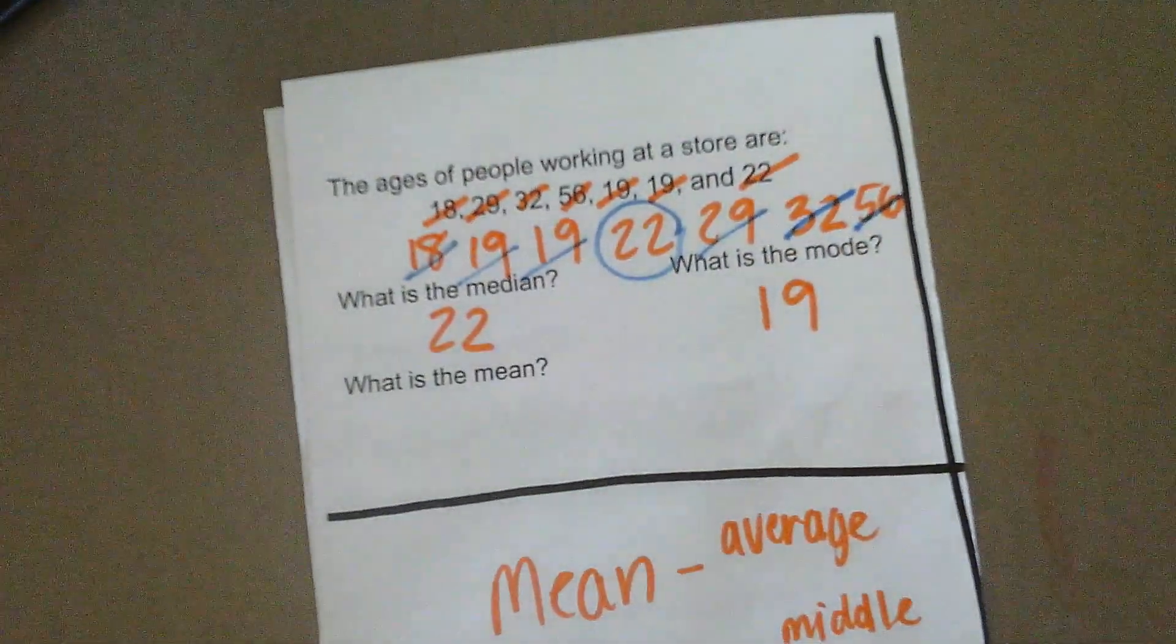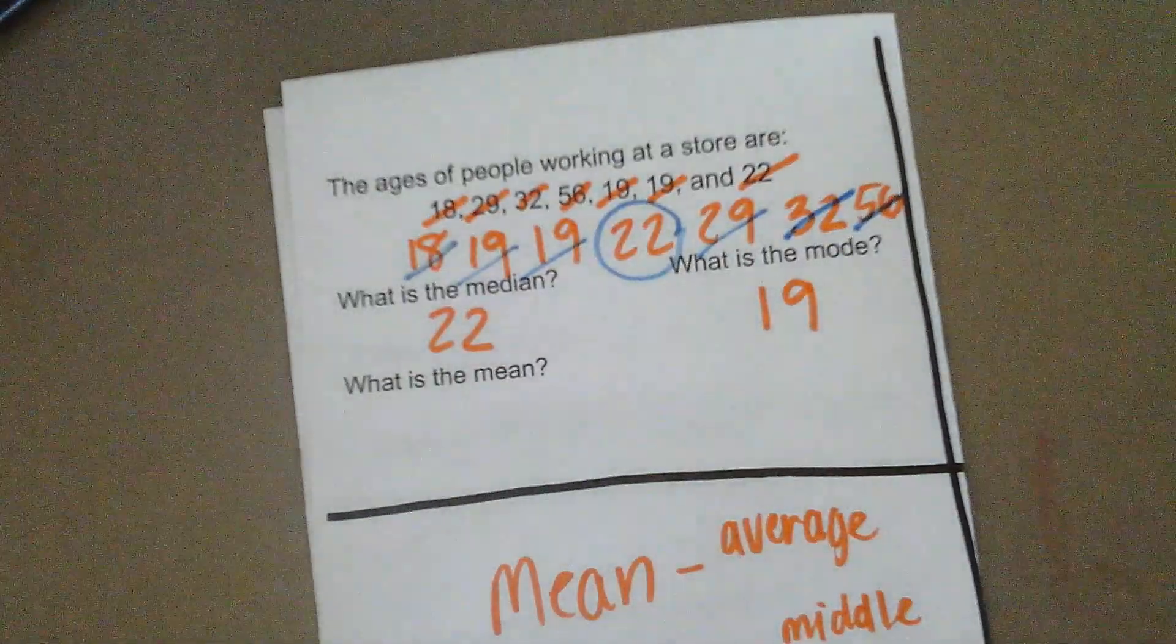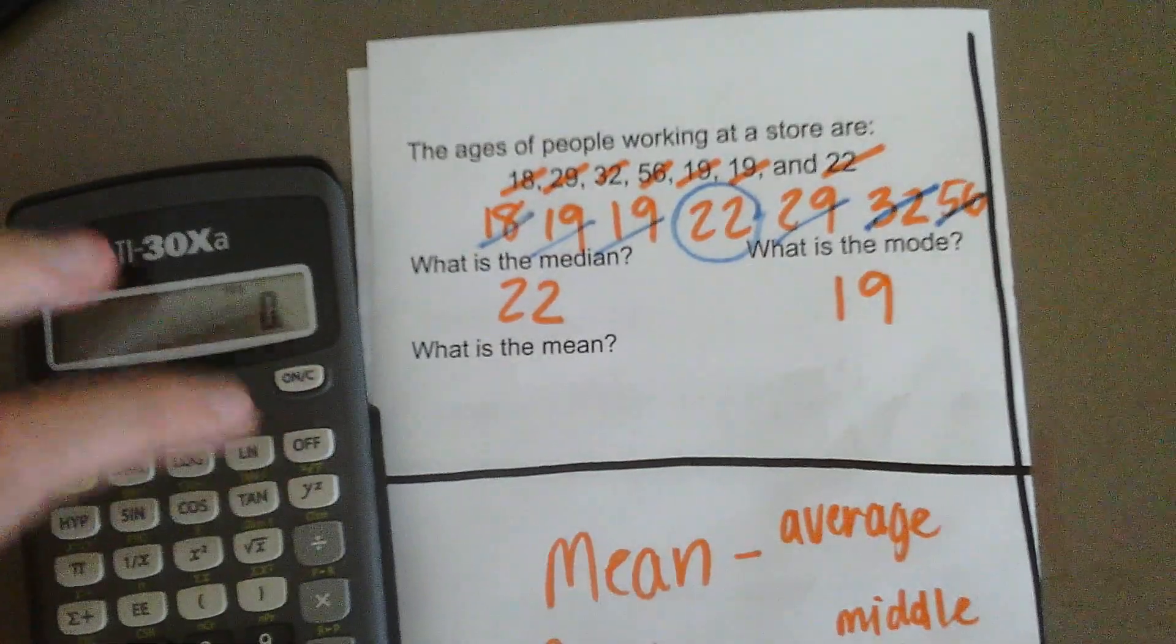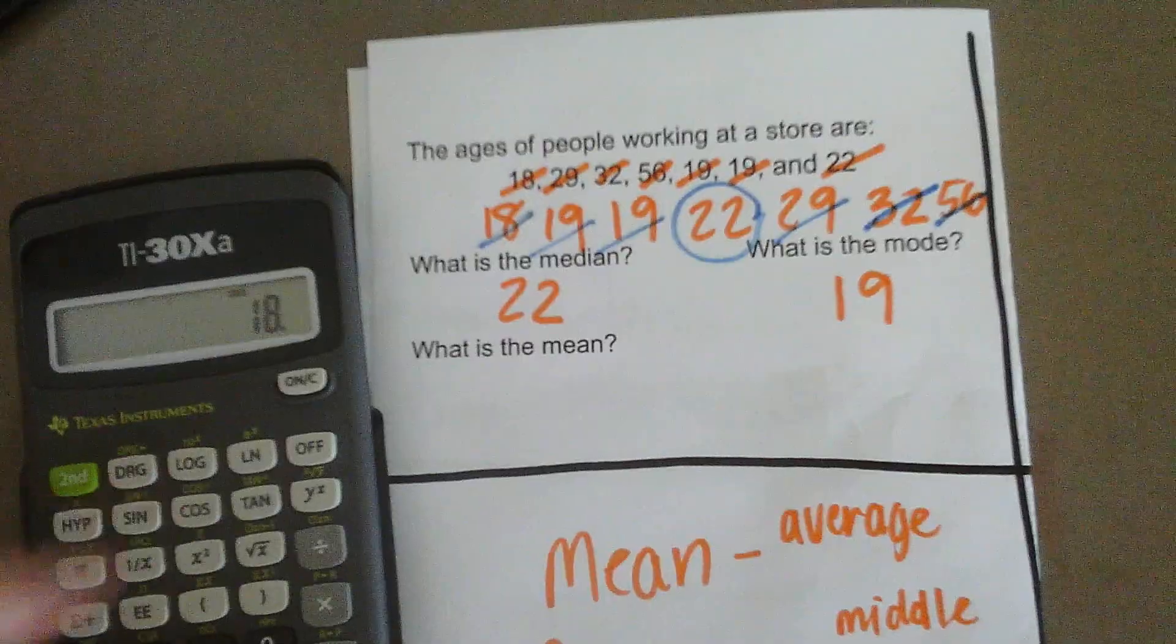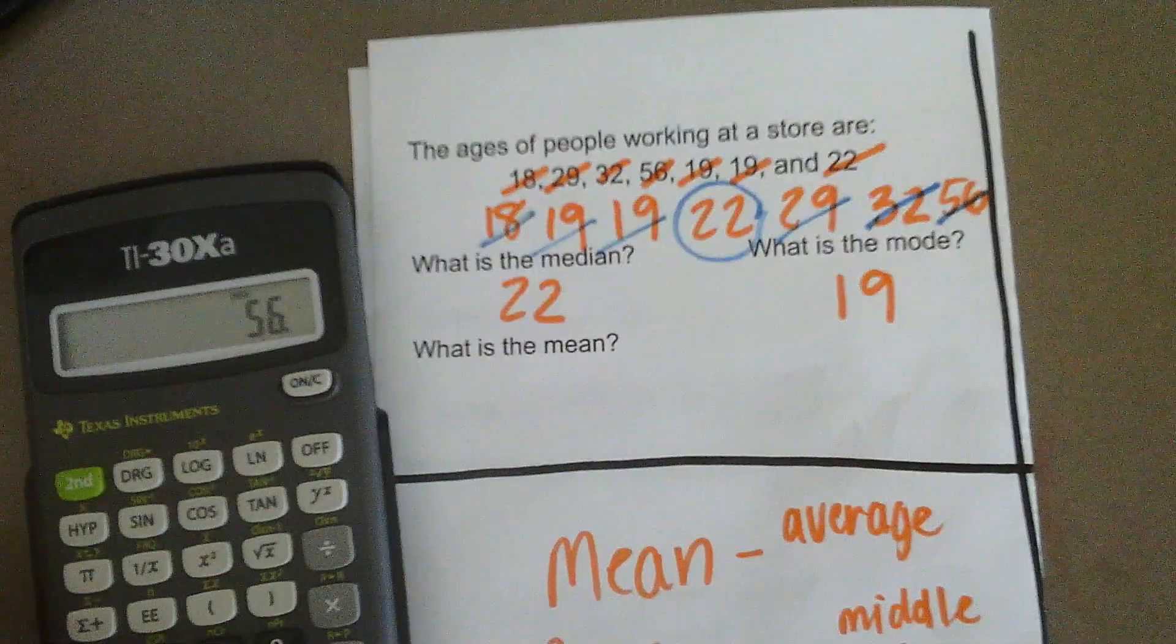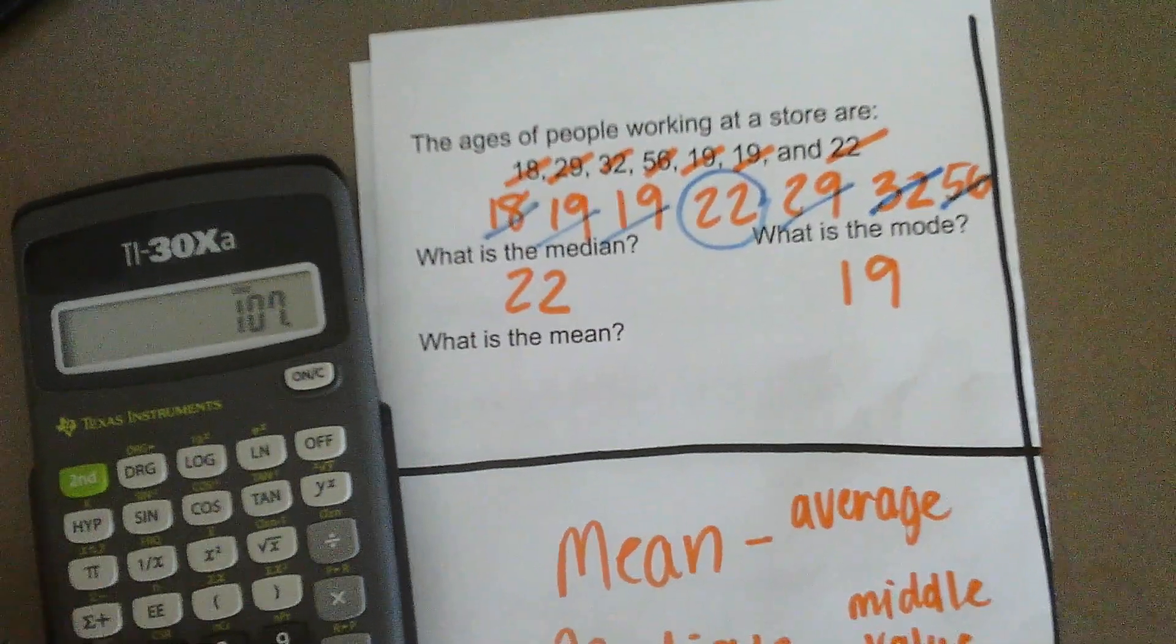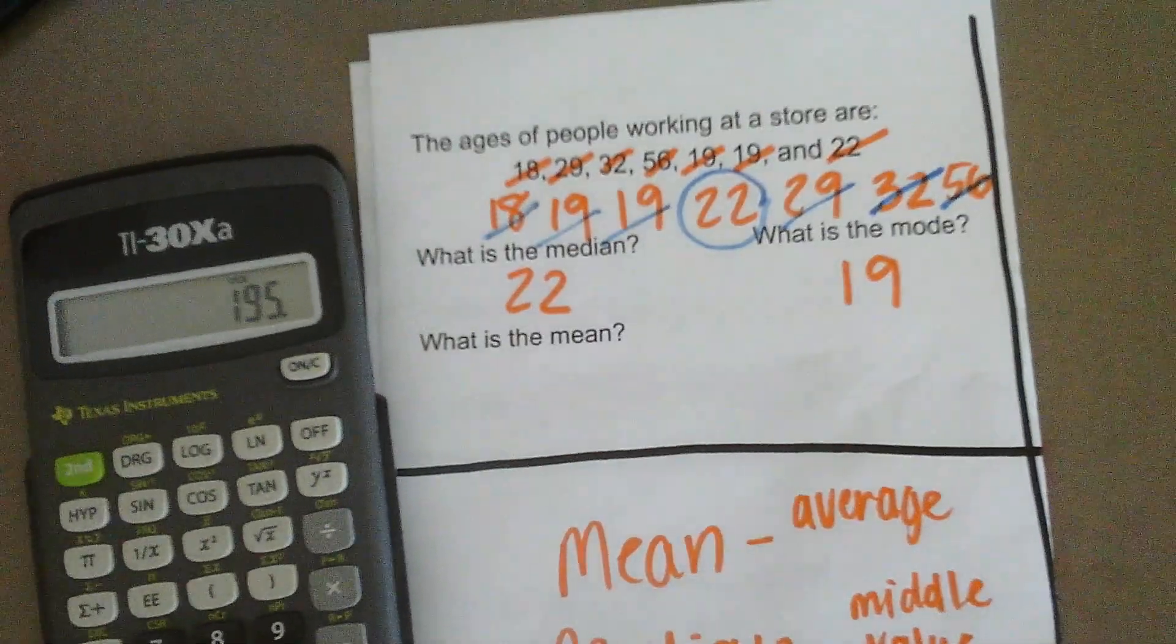To find our mean, we're going to go ahead and add up all of our values. So, the first thing you do is add. We're going to add 18, plus 19, plus 19, plus 22, plus 29, plus 32, plus 56. So, we end up with 195.